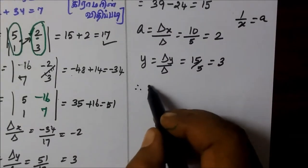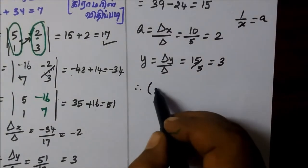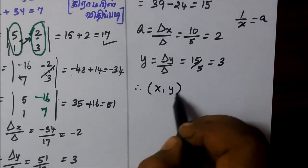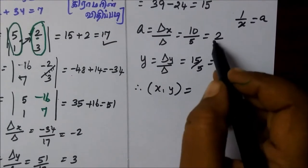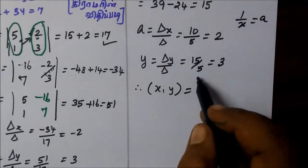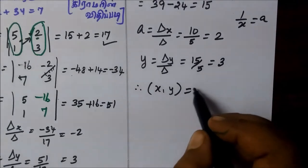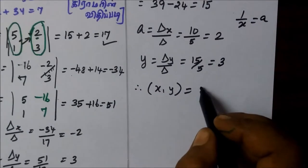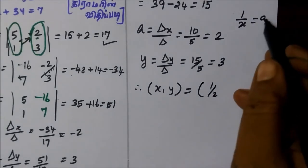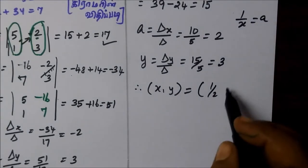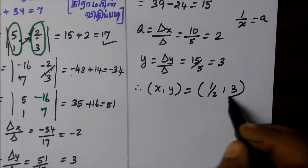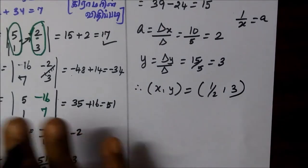So y is equal to 3. Therefore, we need to find the solution x, y. Since 1 by x is equal to a, and a equals 2, then 1 by x equals 2, so x equals 1 by 2. So the answer is x equals 1/2, y equals 3.